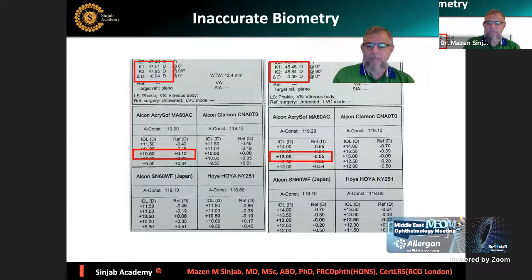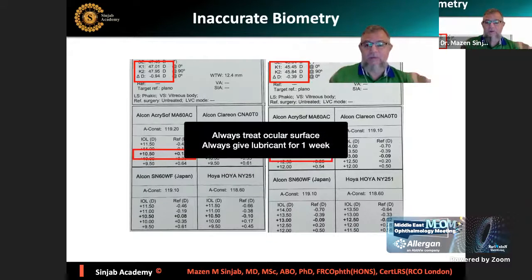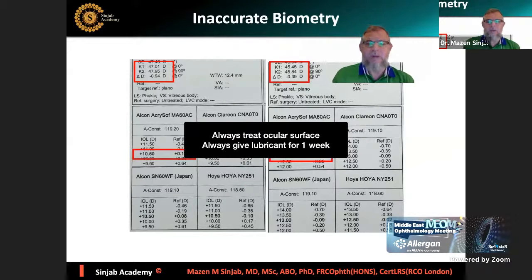So it's very important to give the patient lubricant for at least one week before doing biometry - even if the patient is not suffering from dry eye - because almost 80% of patients coming for cataract surgery have asymptomatic, non-symptomatic dry eye disease.